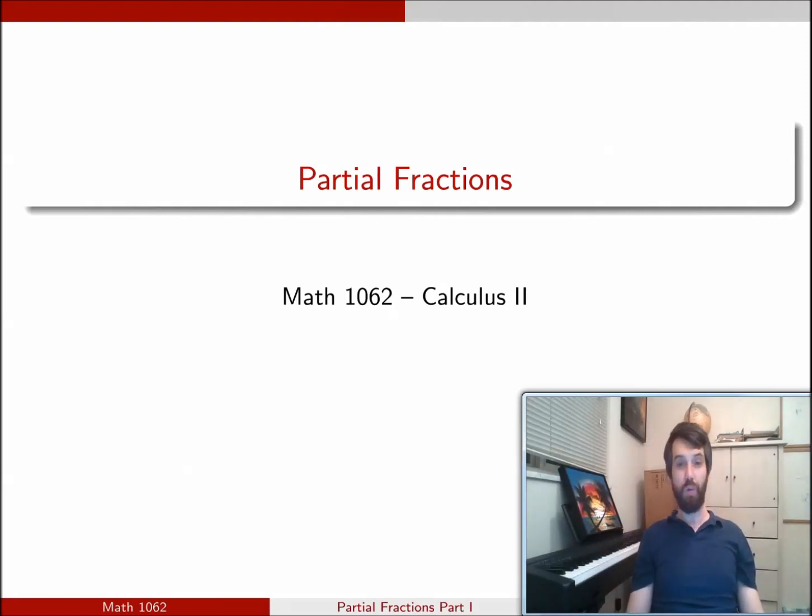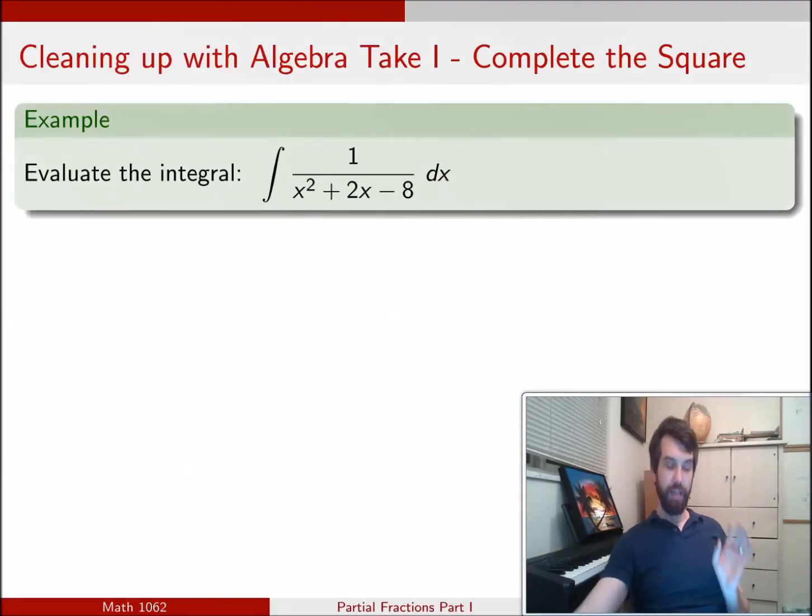In particular, what we want to look at is integrands that are so-called rational functions. What I mean by a rational function is something where it is a polynomial on the top and a polynomial on the bottom. So this is an example of a rational function, which is a polynomial 1 on the top and a polynomial x squared plus 2x minus 8 on the bottom.